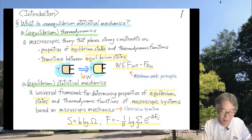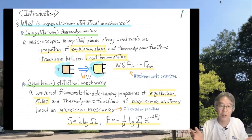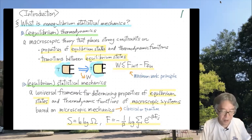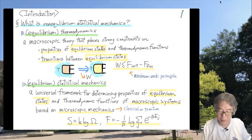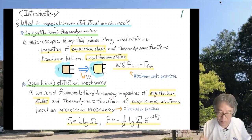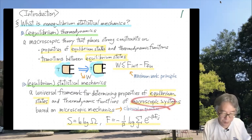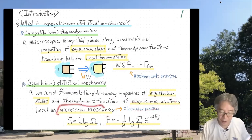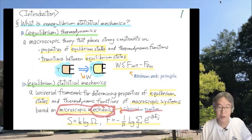What is equilibrium statistical mechanics? Now we talk about atoms and molecules — this is a microscopic theory. It is a universal framework for determining properties of equilibrium states and thermodynamic functions of macroscopic systems based on their microscopic description, i.e., microscopic mechanics, which can be classical or quantum.